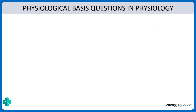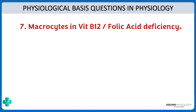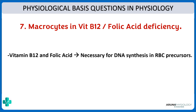Next: why are macrocytes present in vitamin B12 or folic acid deficiency? In these deficiencies we get larger cells — macrocytes. Vitamin B12 and folic acid are required for DNA synthesis in the RBC precursors, so when they are absent, DNA synthesis does not occur properly.